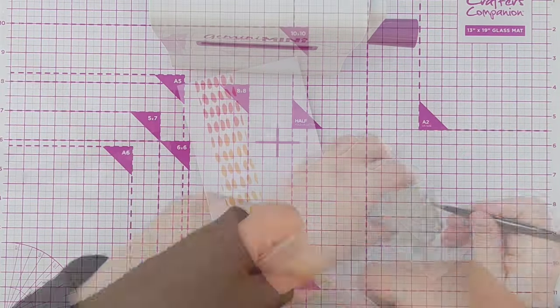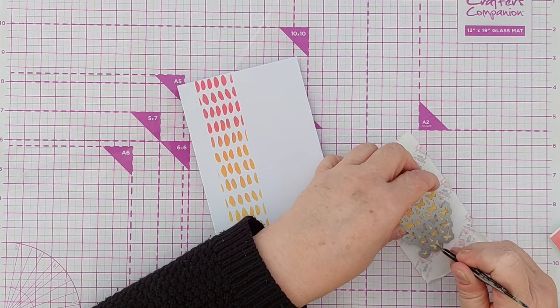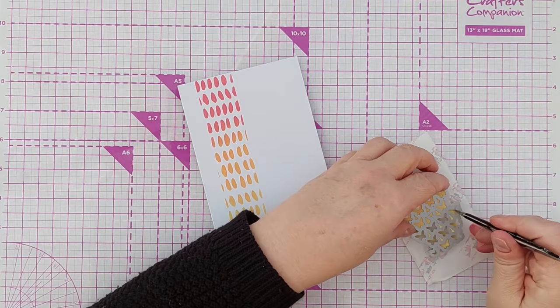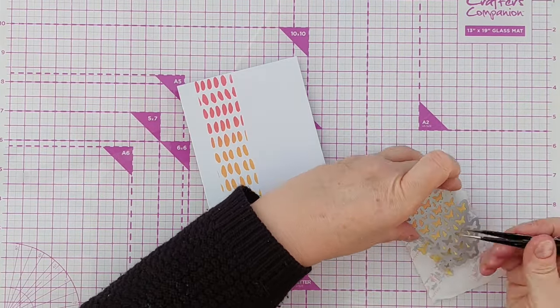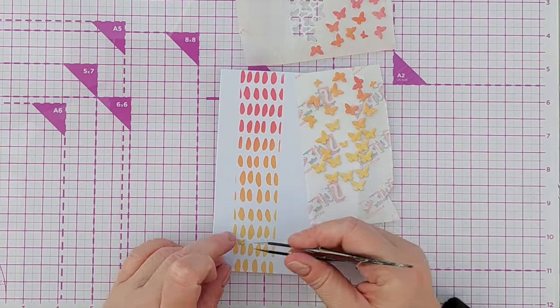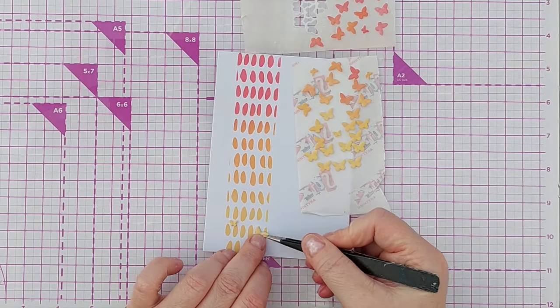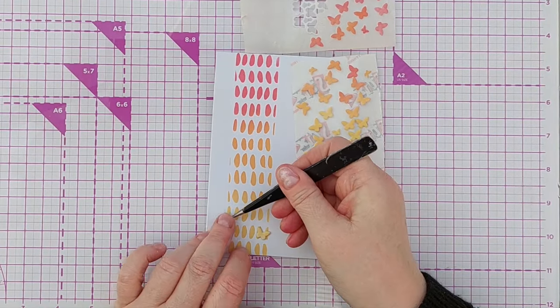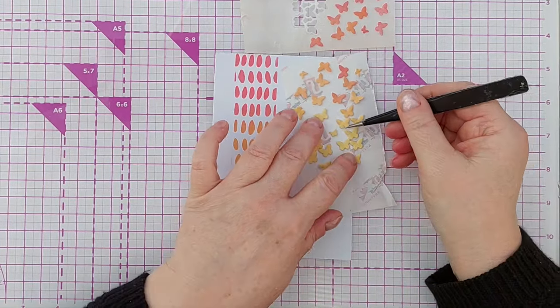So what I end up with is a big pile of sticky dimensional butterflies. To stop my butterflies sticking to my glass mat I poked them out of the die and left them on a bit of the release paper from the craft foam and then I stuck my butterflies on my card. I arranged them in a tone on tone fashion fluttering up the card with some sticking out the sides of the panel.